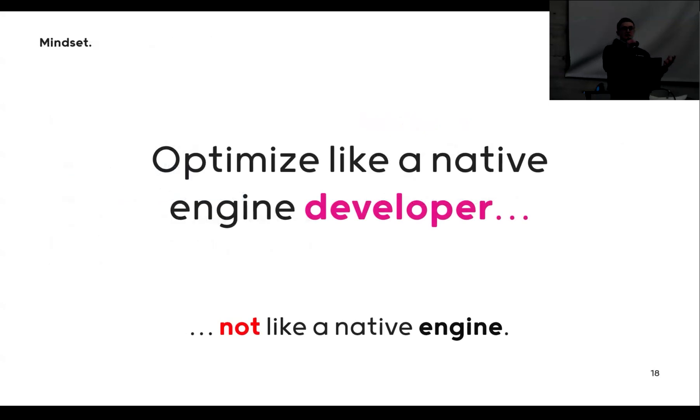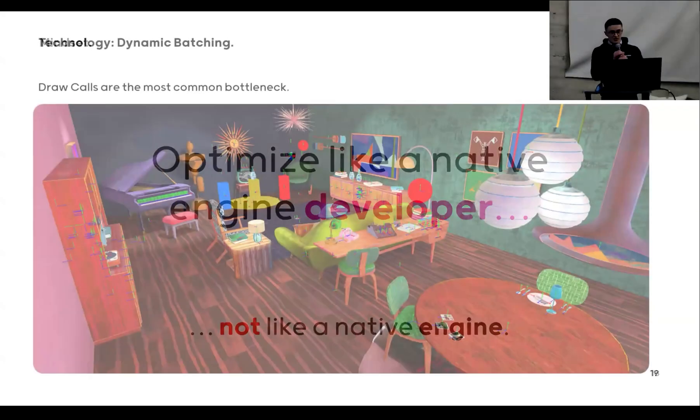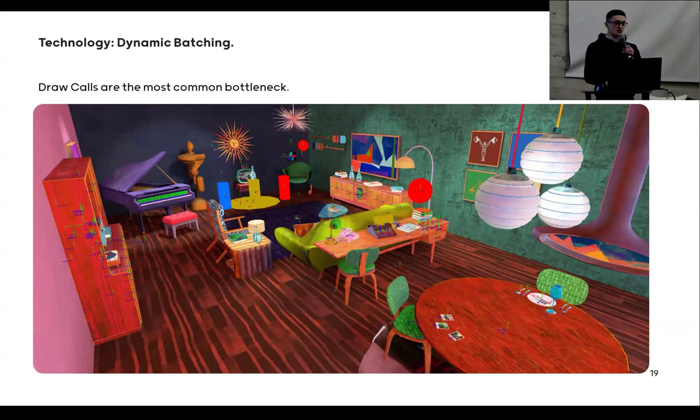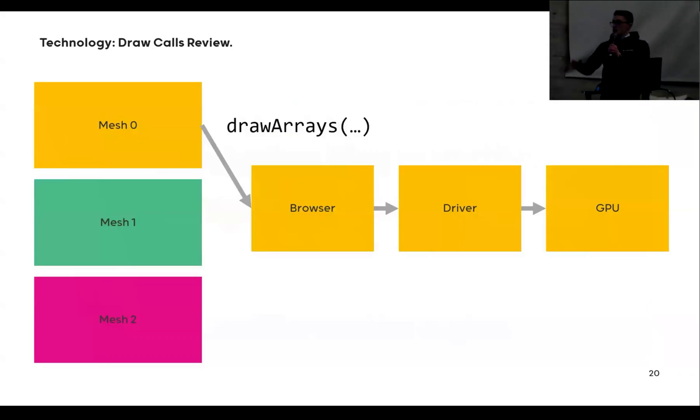I think the general mindset that I want to bring to you all is optimize game engines like a native engine developer, not like a native engine. The optimizations you have in native engines are not necessarily applicable to the web, because one of the biggest bottlenecks we have on the web are draw calls. To give you an idea of what a draw call is, as a developer you want to draw a mesh, you call a function, this function gets piped to the browser, the browser sends it to the driver, and the driver through the GPU.